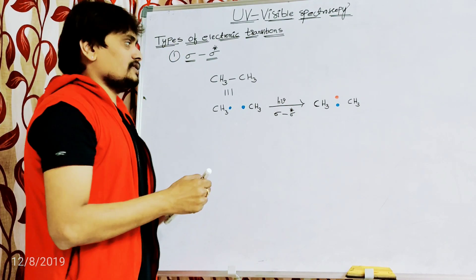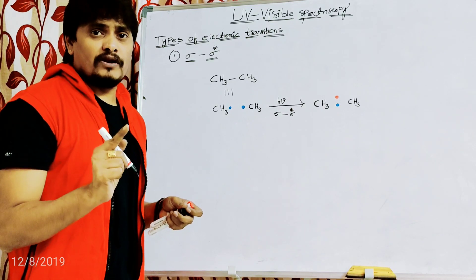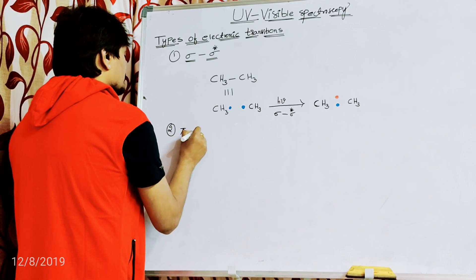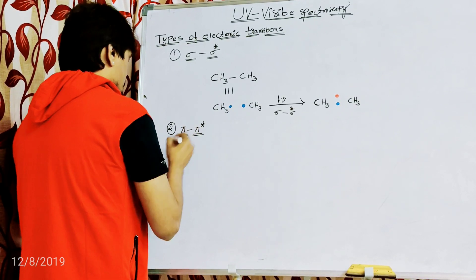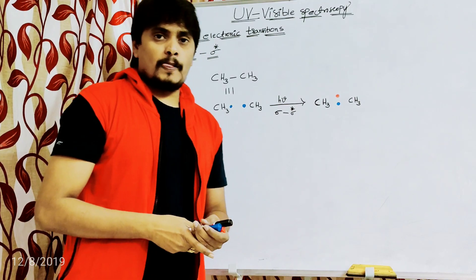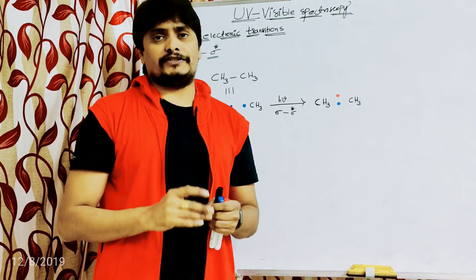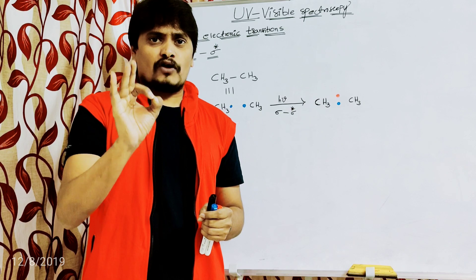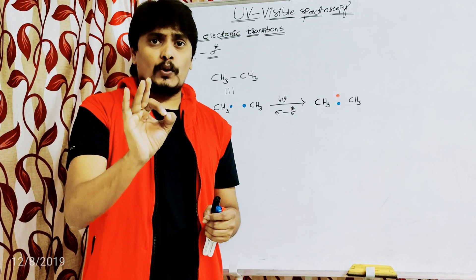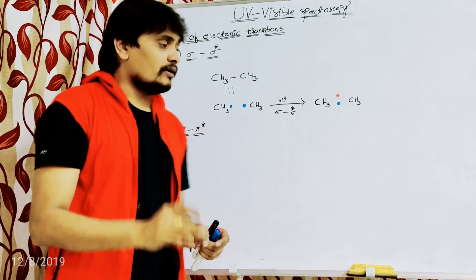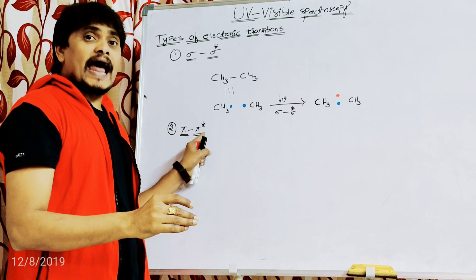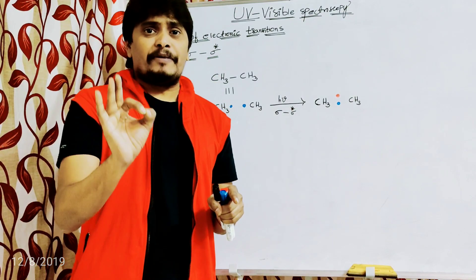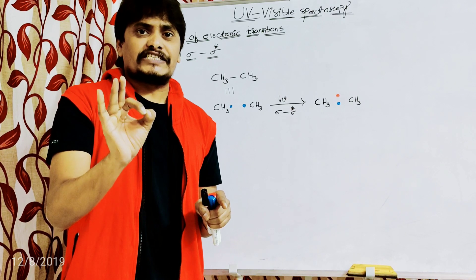The second possible electronic transition is pi to pi star. This electronic transition involves the excitation of an electron from the pi bonding molecular orbital to the pi anti-bonding molecular orbital. Now which class of molecules can be considered as examples in which pi to pi star transition takes place?